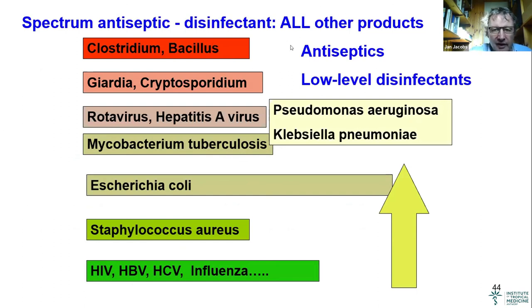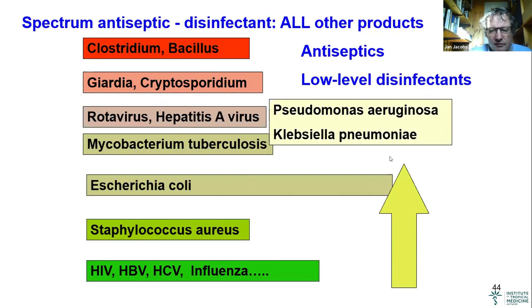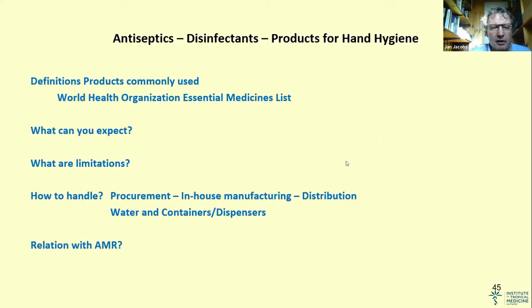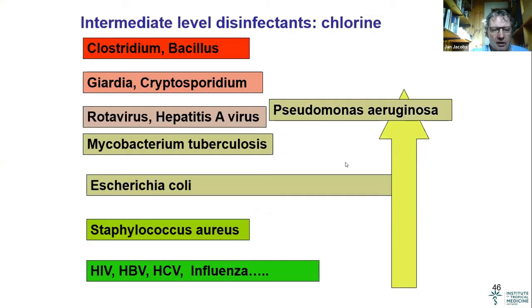All other products — antiseptics and low-level disinfectants — have a lower spectrum of activity compared to alcohol and chlorine.